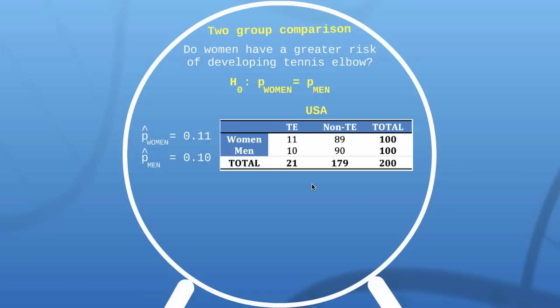Using the sample, do American women have a greater risk of developing tennis elbow? Your first instinct might be to say yes, but appreciate this is a sample and this difference could simply boil down to random variation. Those proportions are so close there's no way we're going to have enough evidence to reject our null hypothesis.